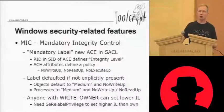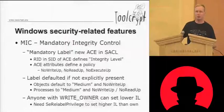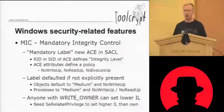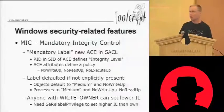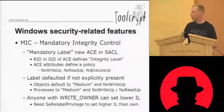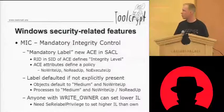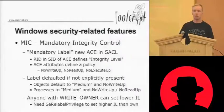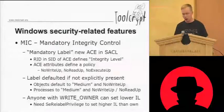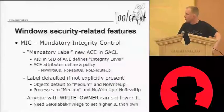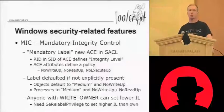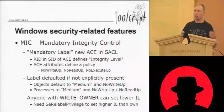Most system resources are by default tagged with the integrity level of medium. If there isn't a mandatory label ACE in the SACL for a specific resource, it will be interpreted as integrity level medium with the no-write-up policy. For processes, the default is medium with both no-write-up and no-read-up. The reason processes also have the no-read-up policy is to prevent a low-integrity process from reading sensitive memory from a higher-integrity process, such as passwords stored in memory.